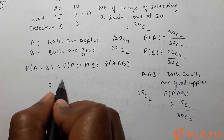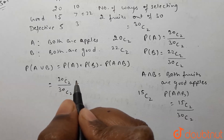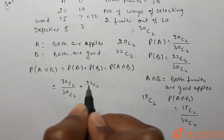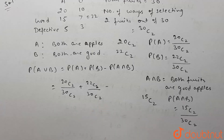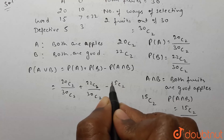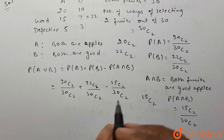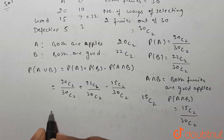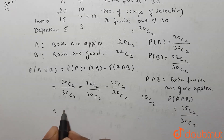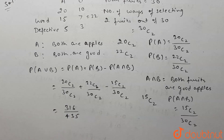Probability of A union B equals 20C2 divided by 30C2, plus 22C2 divided by 30C2, minus 15C2 divided by 30C2. After solving this we get 316 divided by 435 as the final answer.